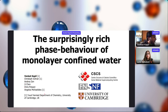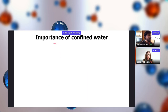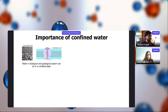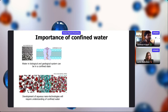I'm going to talk about monolayer confined water and its phase behavior. Before we get to that, we should discuss the importance of confined water. Water is an important material on the planet; however, in biological or geological systems — for example, water in cracks between rocks — water doesn't necessarily exist as a bulk system. It is generally confined even at nanoscales, and this can dictate geological and biological behavior.